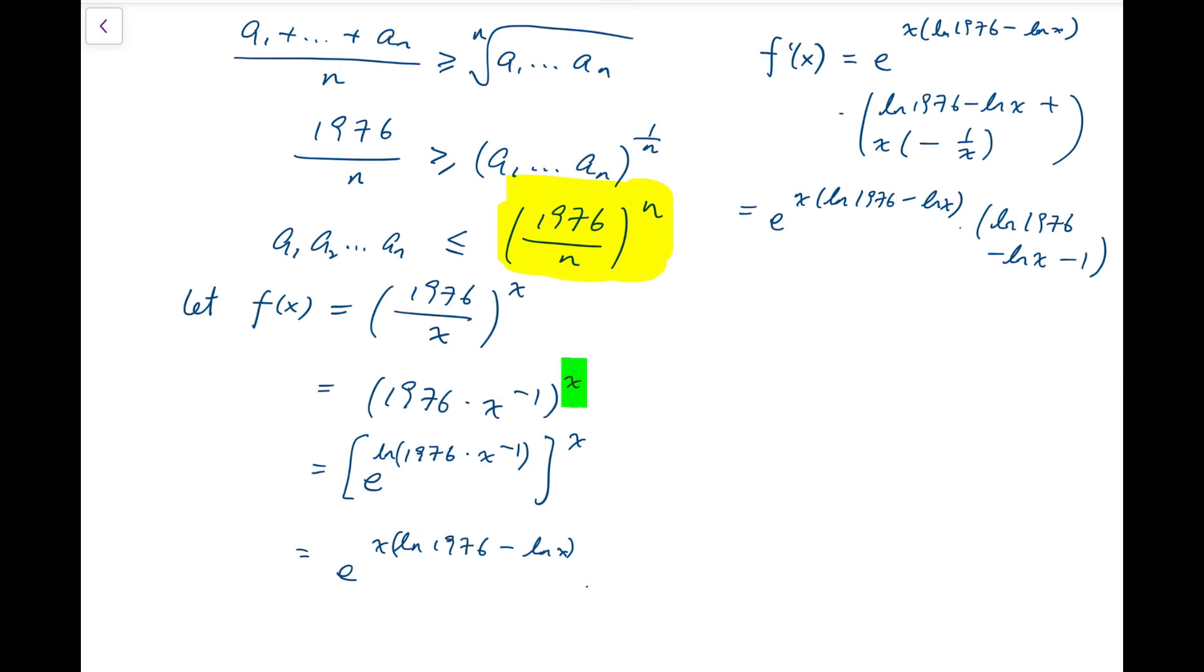To find the maximum, we need the derivative to be zero. As mentioned, our original function f is never zero. That means the only possibility for the derivative to be zero is that the other part is equal to natural log of x plus 1. Solving we'll have x equals 1976 over e.